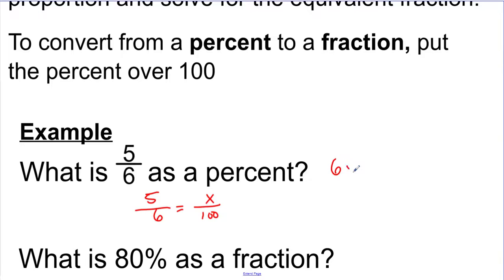So 6 times x, let's do the work over here where I got some space, 6x. 5 times 100 is 500. So I will do the division here. 6 goes into 500. We'll start by 6 into 5 doesn't go. 6 into 50 goes 8 times. 8 times 6 is 48. Subtract and get a 2.